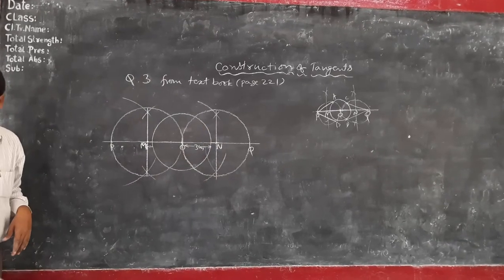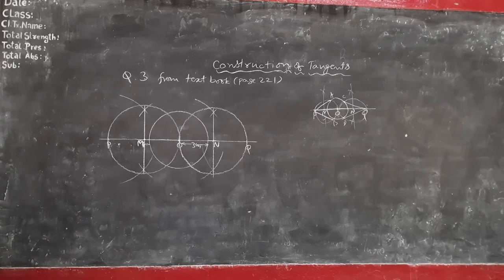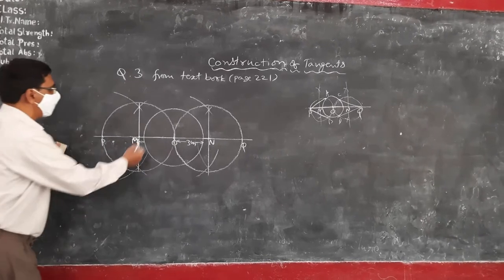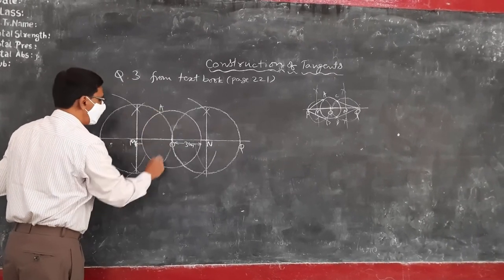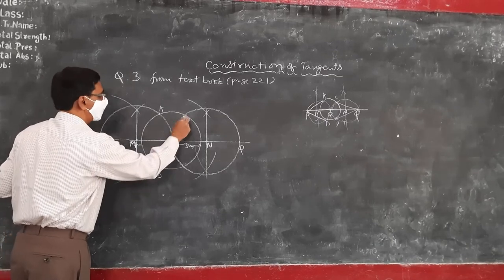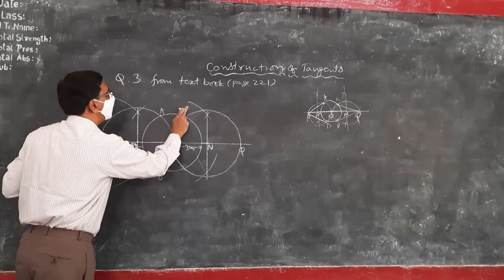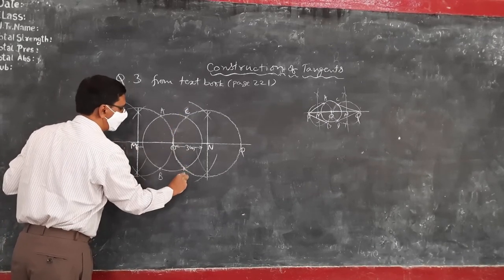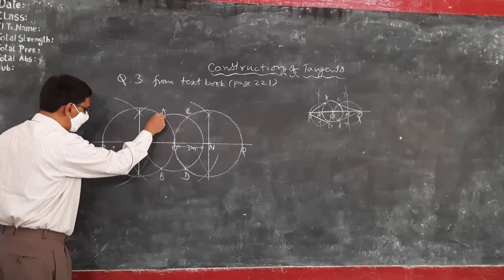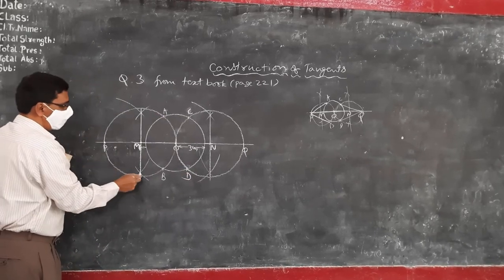Two circles are drawn. Now, look at the points of intersection: A, B of the circles, and C and D here. Now, these are the points to be joined to P and Q.